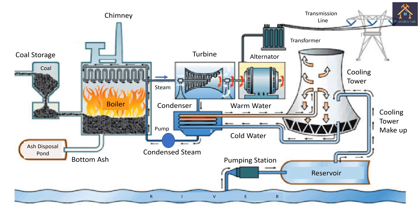Before discussing the parts of the power plant, let's discuss the basic working principle of the thermal power plant. First of all, the pulverized coal is fed to the boiler via coal handling plant and the preheated air is supplied for burning of the fuel. The flue gas from the boiler is emitted through the chimney either by forced draft system or natural draft system. The ash produced by burning of the fuel is carried out to the ash handling plant or ash disposal pond.